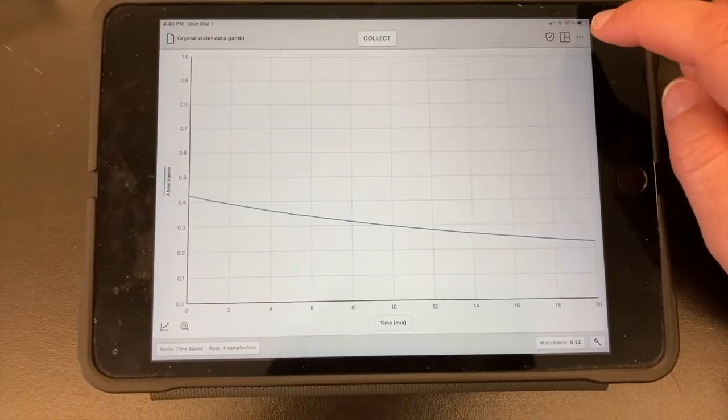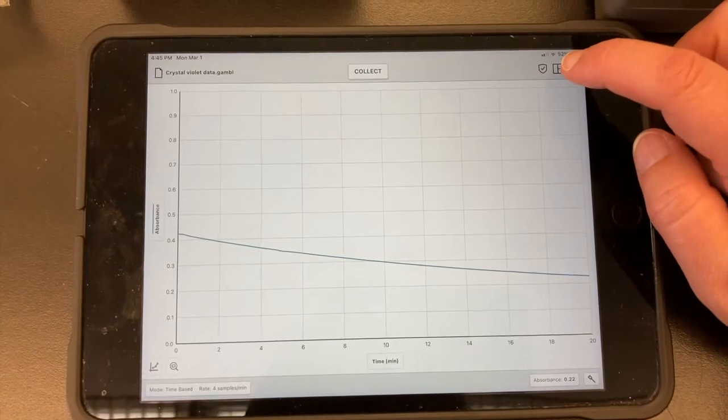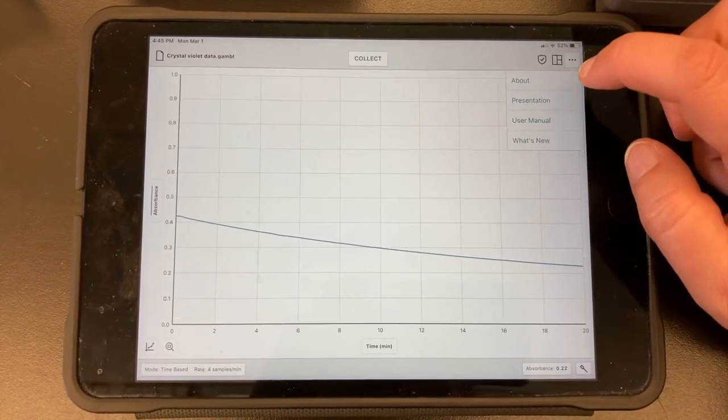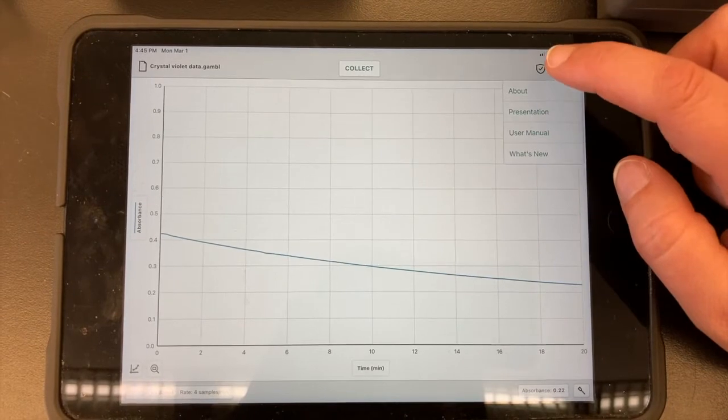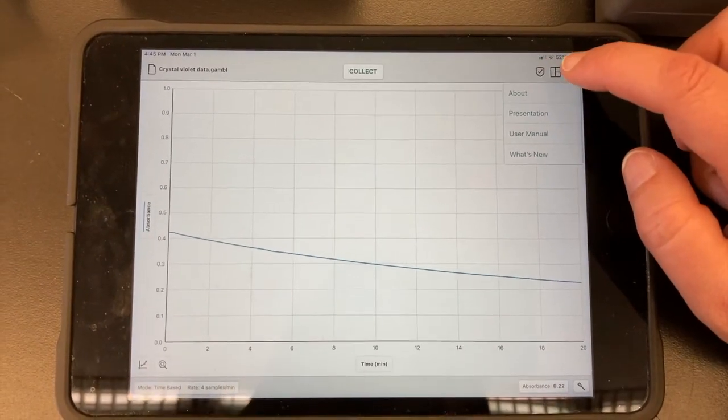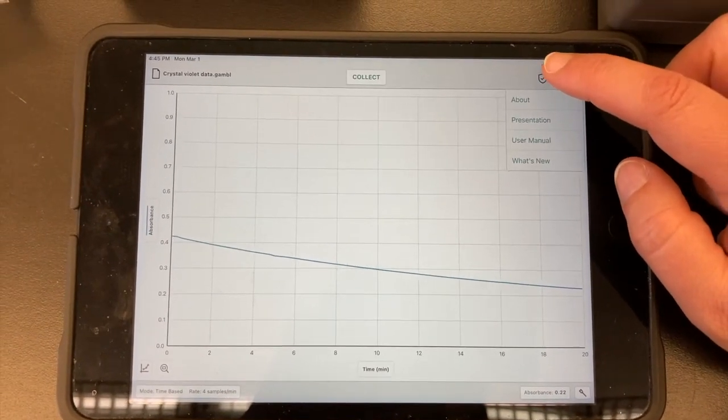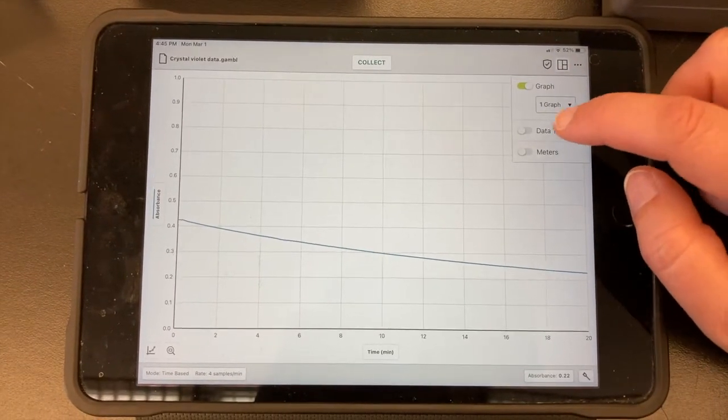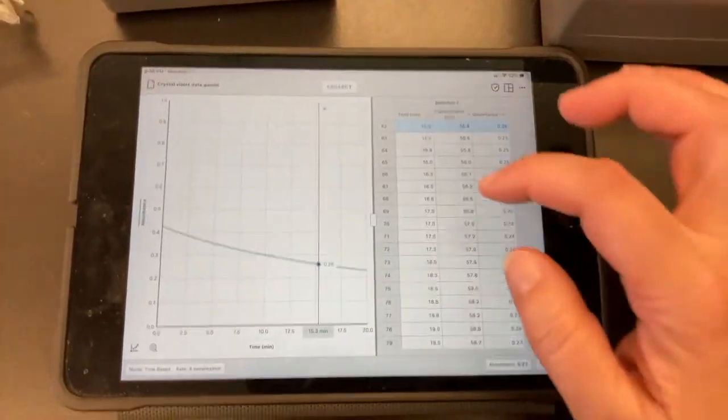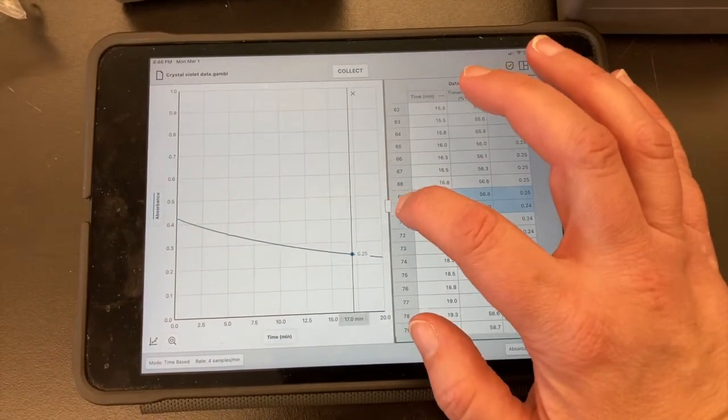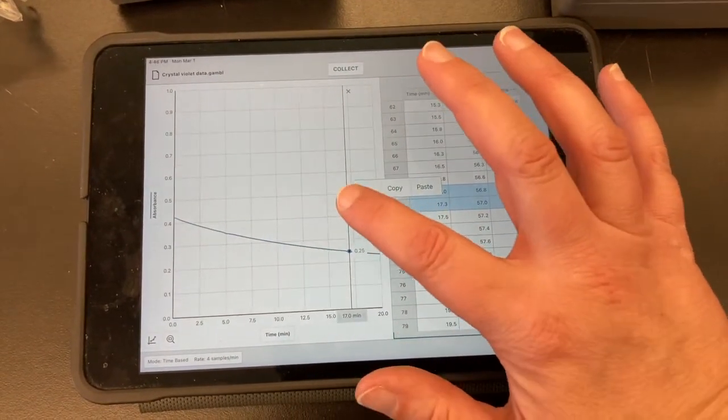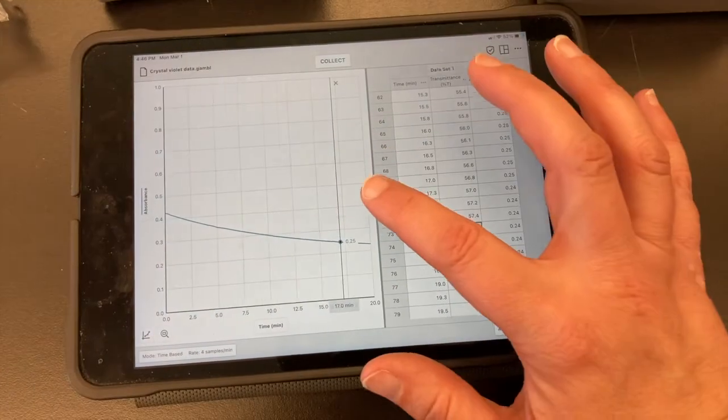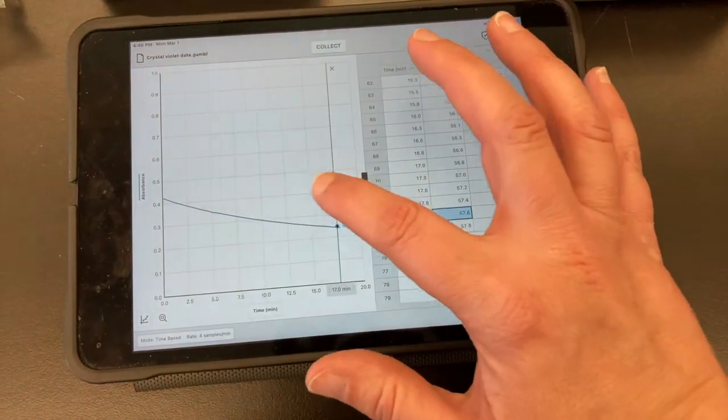Once your data collection is complete, you are going to need to set up your data table so that you can do the analysis. What we want to do is click this button in the corner that has the rectangle and two squares. And we want to see a data table. So I am going to move the graph out of the way for the moment so we can add our extra columns.